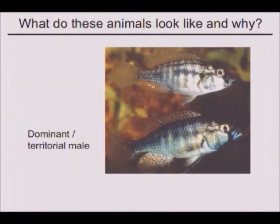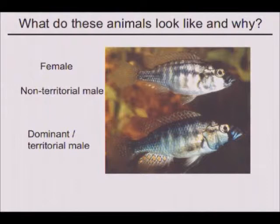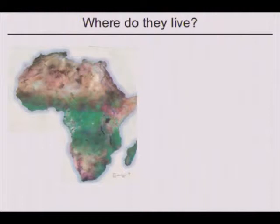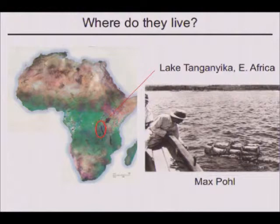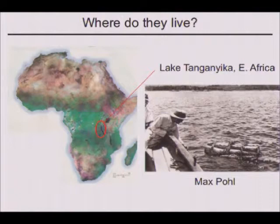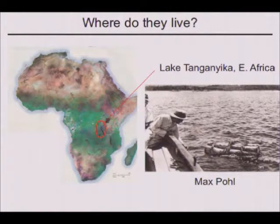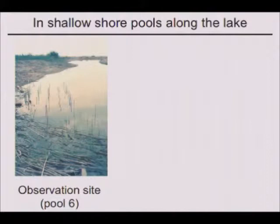At the bottom is the dominant territorial male, and up here might be a female, but it might also be a non-dominant or non-territorial male. They live in Africa — Lake Tanganyika in particular — and this has been studied primarily by scientists. This is Max Pohl, who, when the Europeans were helping the Africans remove all of their valuable assets, was sent to identify what could be harvested from the lake. His major research tool was the depth charge — he blew up large volumes of water, collected the animals, and brought them back to Belgium where he wrote books about them. Not a lot of information about behavior, but it did tell us at least where to go and look for them initially. They live in shore pools along the edge of the lake.